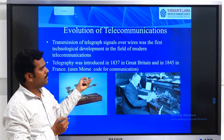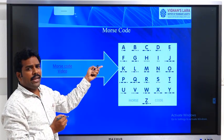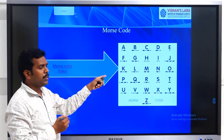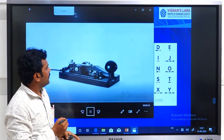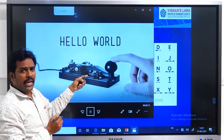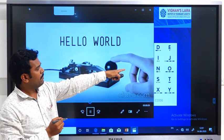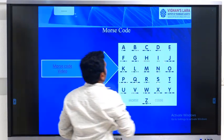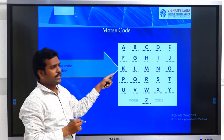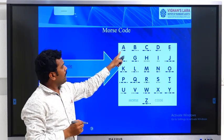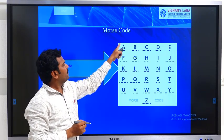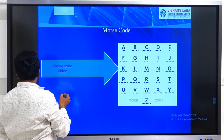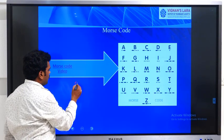Now we see an example of Morse code. For each and every alphabet or number, we have a Morse code. Here, by pressing a button with specific time gaps, it is going to decode the alphabets or numbers. If you observe, for all the alphabets, we have some codes. For example, for A, if you observe the time gaps, pressing with those time gaps will decode it as A.